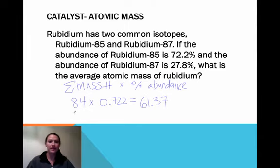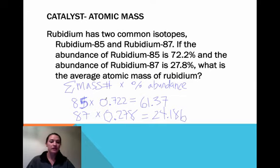And then I'm going to do the same thing with my next isotope. So the next isotope, sorry, that's supposed to be a 5. My apologies, is 87 times 0.278. And that's going to be 24.186. So I've taken each of my mass numbers. There's 72% of this, and there's 27% of rubidium-87. And then I just add them up. So I take these two, and then I add them.